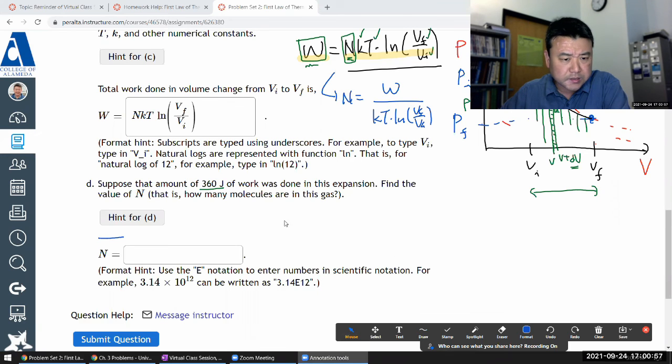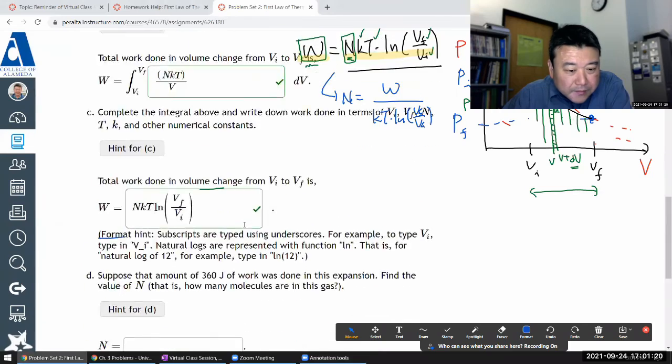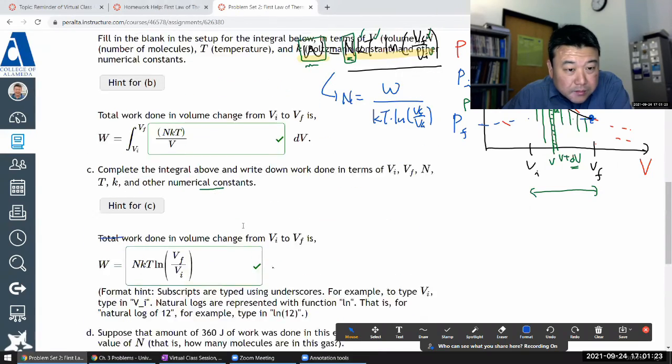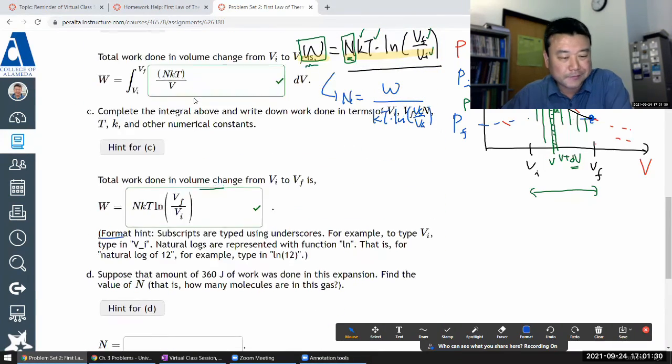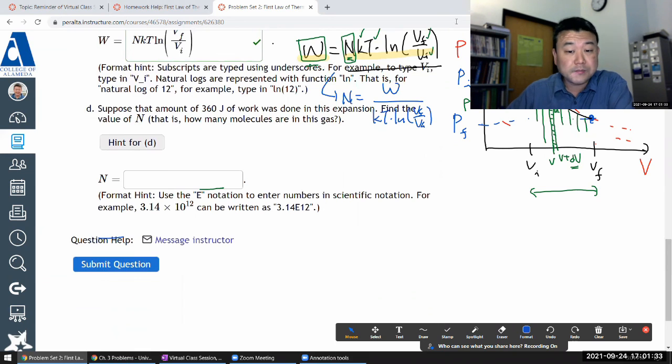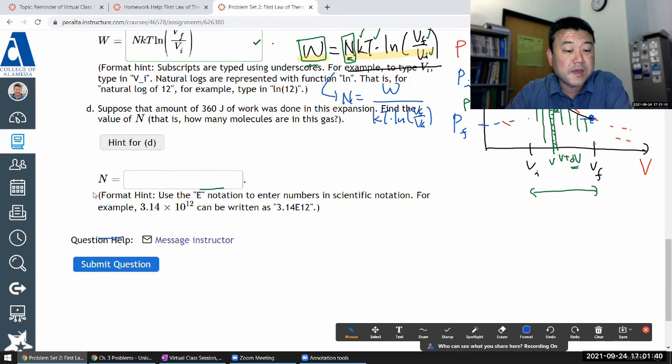So you plug in the numbers and that's it. I'll leave that for you. I'll just submit and make sure my parts A through C are correct, and I will leave this number plugging in exercise for you. One thing to check: when you do this, you should get a positive answer. Somehow if you flip the V initial and V final, you will get a negative answer. So make sure you get a positive answer. There are only three possible points and there are four parts, so the fourth part is plugging in the numbers. You should get a pretty large number, that's why I'm giving you this format hint about using the E notation.